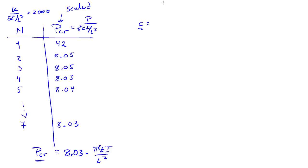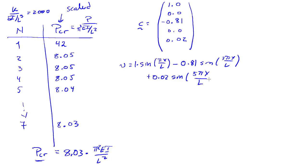If you look at the corresponding eigenvector and the first few terms, we find there's a dominant component that is the first sine wave. There's really no second component. The third component is on the order of the first component. The fourth component doesn't exist. The fifth component is really pretty small, only 2% of the whole thing. So the approximate buckling shape looks like 1 times the sine of pi X over L minus 0.81 times the sine of 3 pi X over L plus 0.02 times the sine of 5 pi X over L.